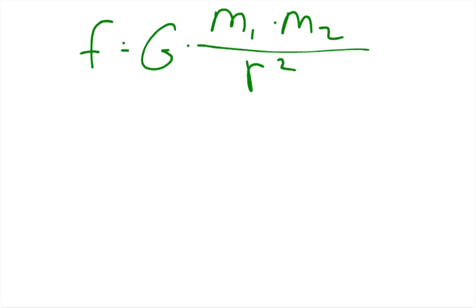So what we have is our equation for the force of gravity is the gravitational constant times the mass of object 1 times the mass of object 2 divided by the radius squared.